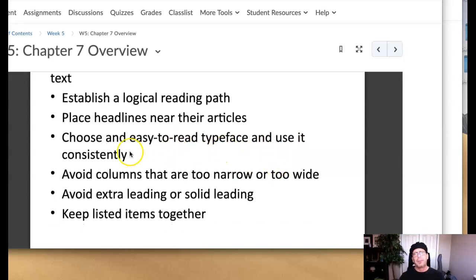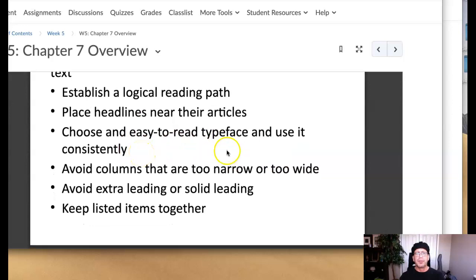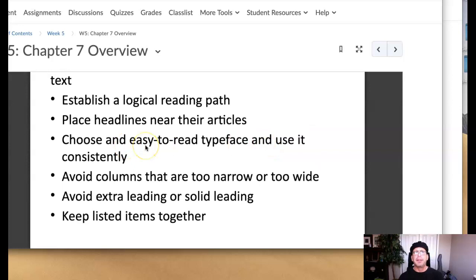Of course, our basic rules are choose easy to read typefaces. And keep in mind the difference between readability and legibility here. Legibility refers to the typeface itself. Is it easy to decipher the B from the D, for example, where readability is the way the type is set. So you can have a perfectly legible typeface, and it's not readable because the type is not set well. Makes sense?